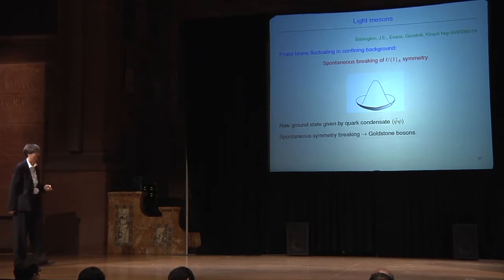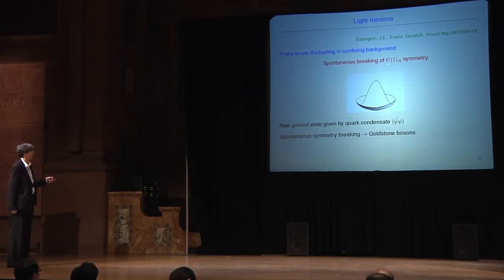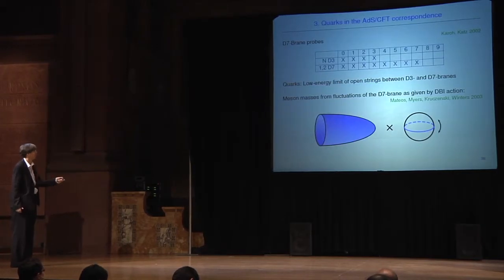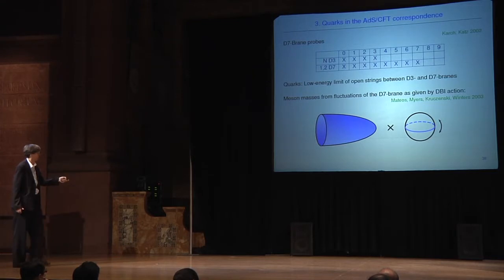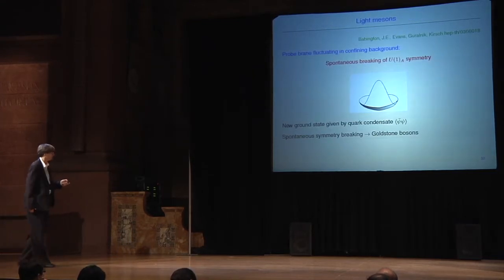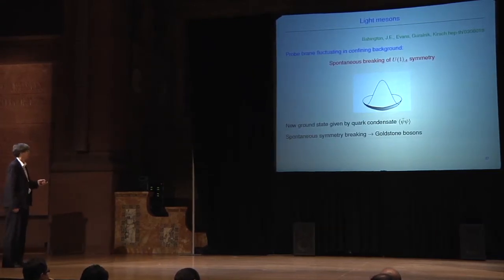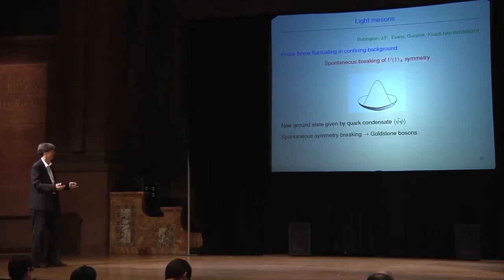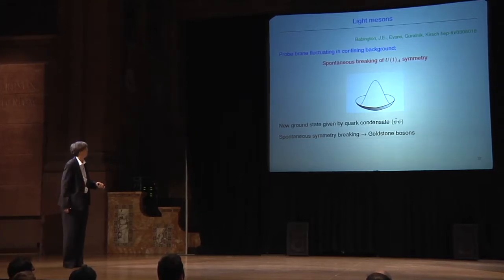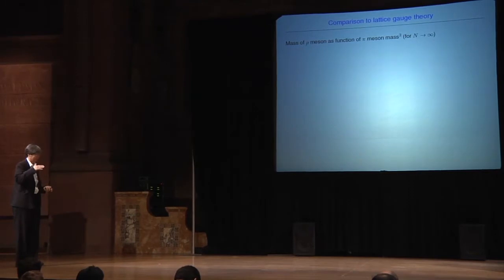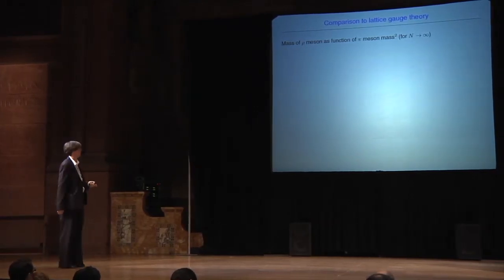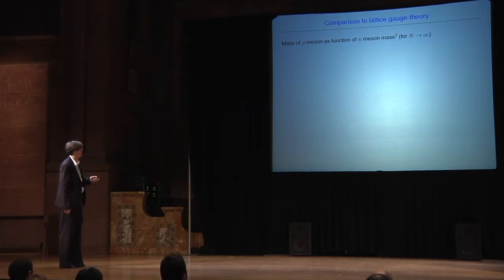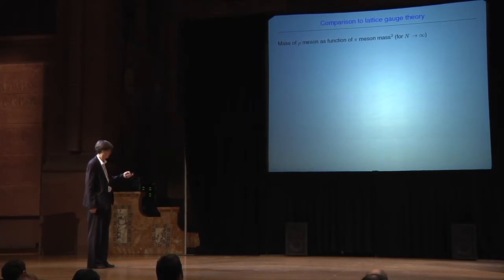We took such a D7-brane and embedded it into a confining background — a geometry dual to a confining theory — and this gives a spontaneous breaking of U(1) axial symmetry. This can be viewed as a toy model for chiral symmetry breaking, giving a new ground state from a quark condensate, associated with Goldstone bosons. This approach can be used to compare to recent lattice gauge theory results: we can calculate the rho meson mass as a function of the pion mass squared in the large-N limit.